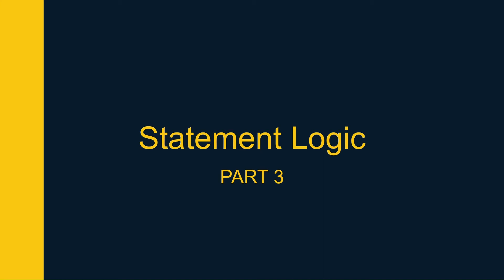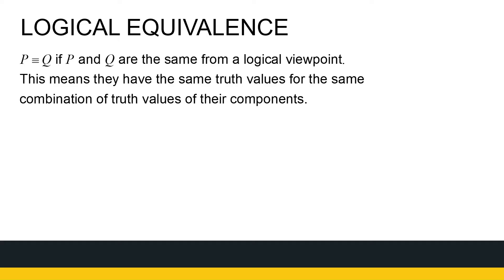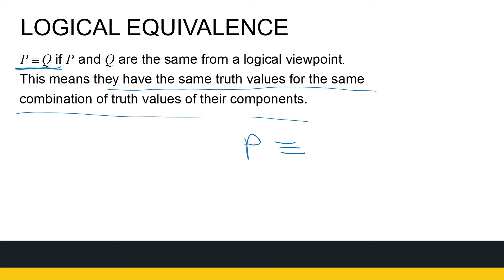We're looking at statement logic, and specifically logical equivalences. Logical equivalences play a big role in proving statements going forward in algebra. Two statements P and Q are logically equivalent if they're the same from a logical viewpoint — meaning they have the same truth value for the same combination of truth values of their components. The symbol we use is three lines, not an equal sign.